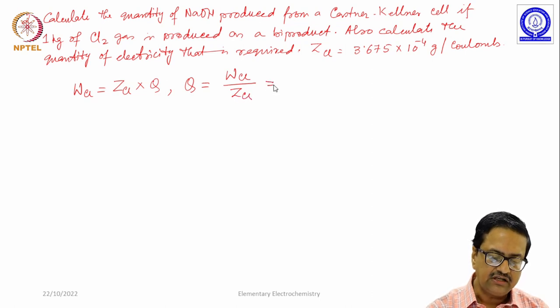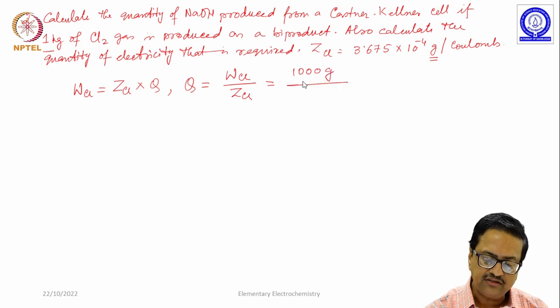What is W_Cl, weight of chlorine, it is 1 kg. As soon as you see that it is 1 kg and z is given in gram, we should write it as 1000 grams divided by the corresponding z that is 3.675 × 10^-4.